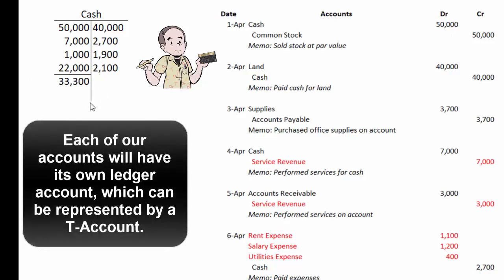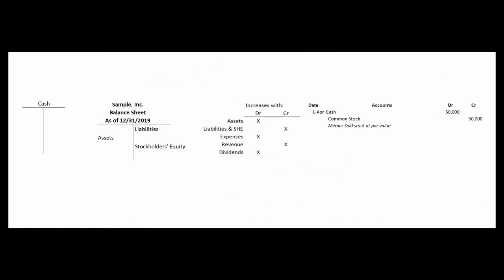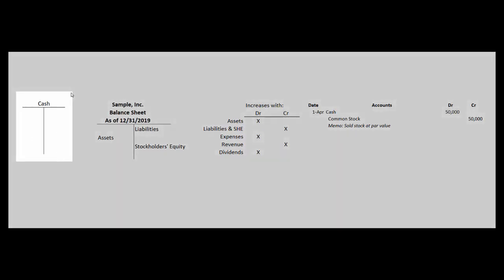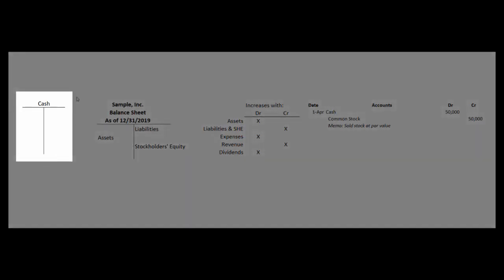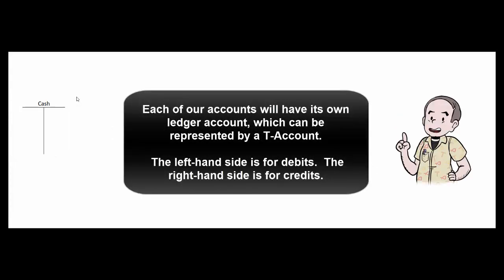We'll have T-accounts for all our accounts. For example, Accounts Payable will have a T-account and its normal balance will be a credit. So in your first couple days of accounting class, please don't be confused by all the things that look like T-accounts. There really is only one T-account — it's just a graphic representation, accounting shorthand for the ledger account. Each of our accounts will have a ledger account, and each can therefore be represented by a T-account. The left-hand side is for debits, the right-hand side is for credits. Hope that helps.